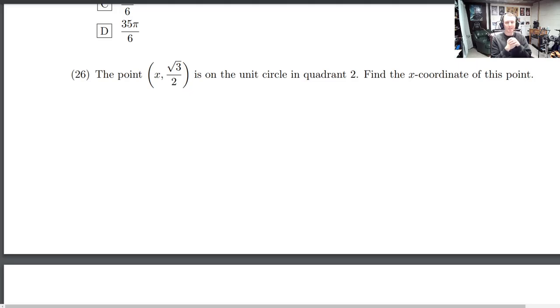The point x, root 3 over 2, is on the unit circle in quadrant 2. Find the x-coordinate of this point.